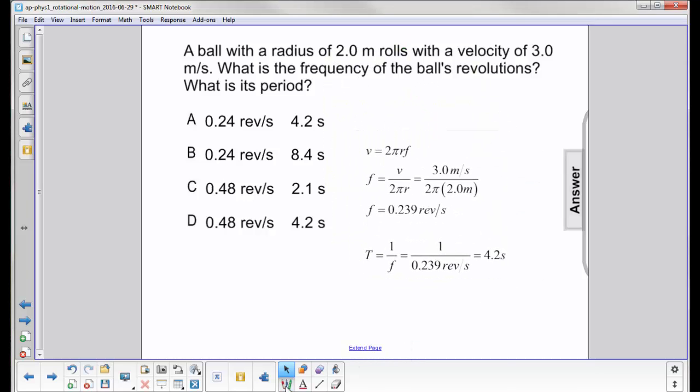The equation for frequency is related to velocity, linear velocity here. Linear velocity is 2 pi rf. We are given r here, this is the radius of the ball, and here's the velocity. We want to find the frequency and period.